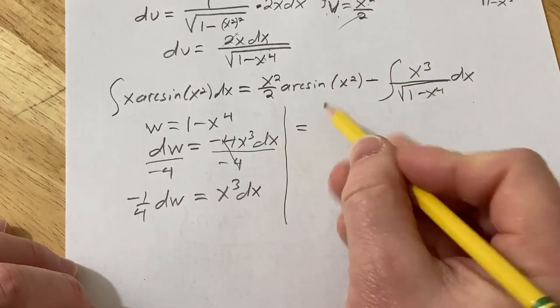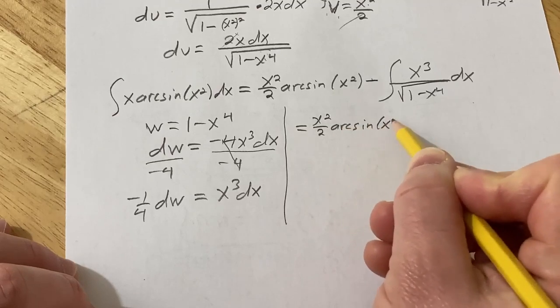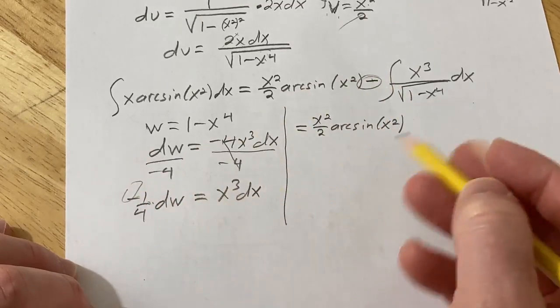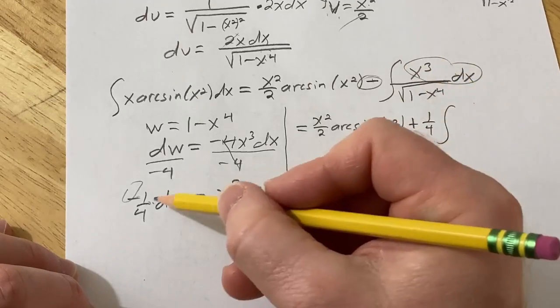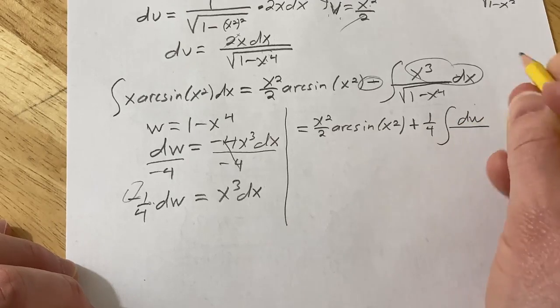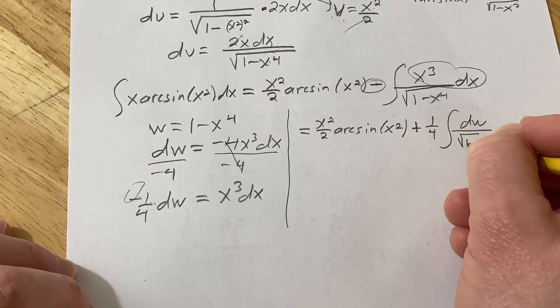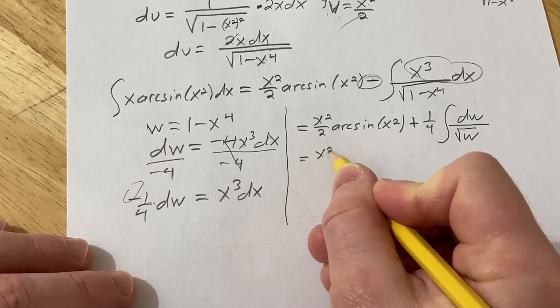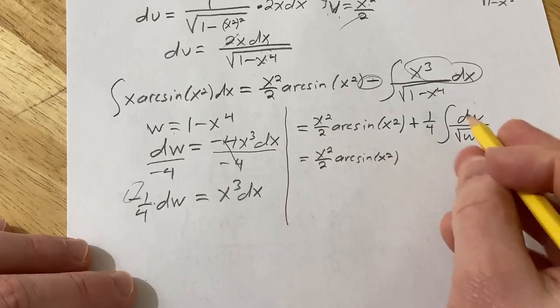So continuing, this is x squared over 2, arcsin x squared. And then minus and minus is going to be plus, because there's a minus here, there's a minus here. I'm going to pull out the 1 fourth. So it's plus 1 fourth. And then this, again, it's negative 1 fourth dw. So it'll just be dw over, and then on the bottom here, we just have the square root of w. I almost said u, w, right?